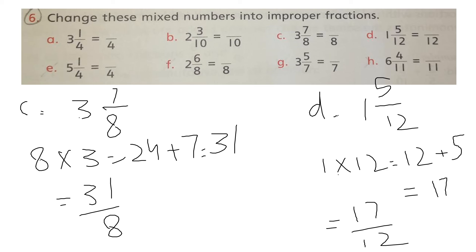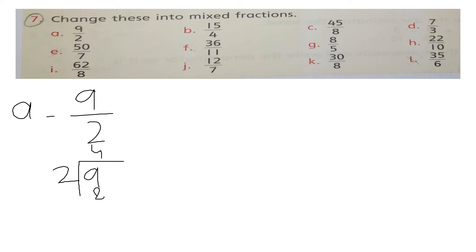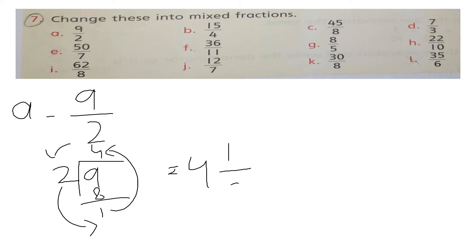You have to do all parts in your notebook. Now question 7: improper fractions are given and we have to change them into mixed fractions. Part A: 9 by 2. Write 9 inside and divide by 2. 2 fours are 8, remainder 1. So the answer is 4 whole 1 by 2.